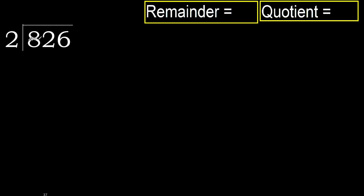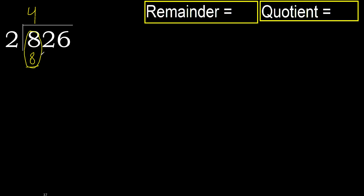826 divided by 2. Starting with 8: 2 multiplied by which number is nearest to 8 but not greater? 2 multiplied by 5 is 10, it's greater. Multiplied by 4 is 8, it's not greater. Subtract: 8 minus 8 equals 0. Next.